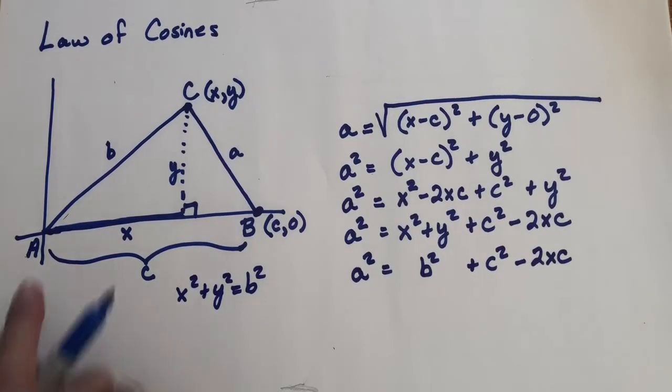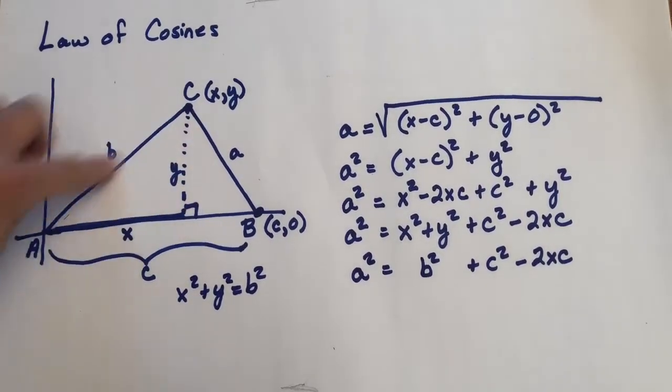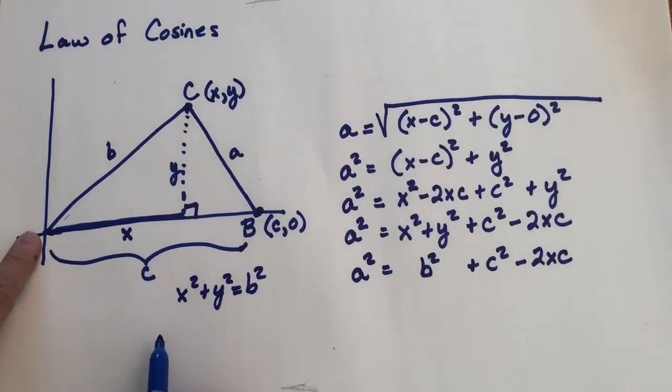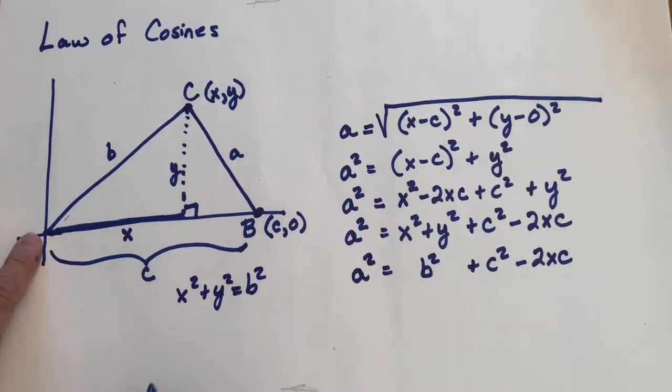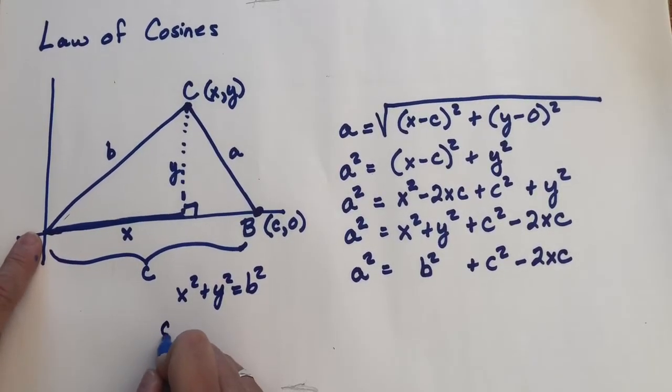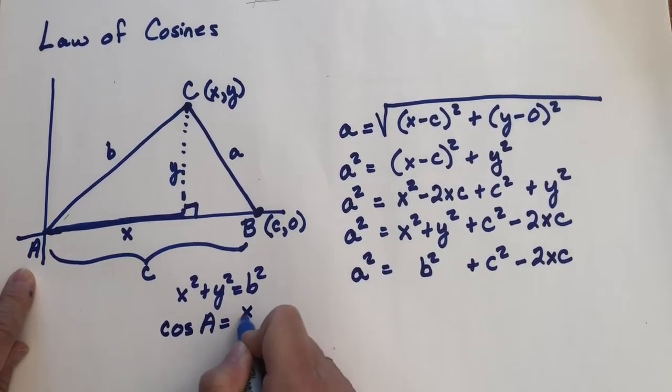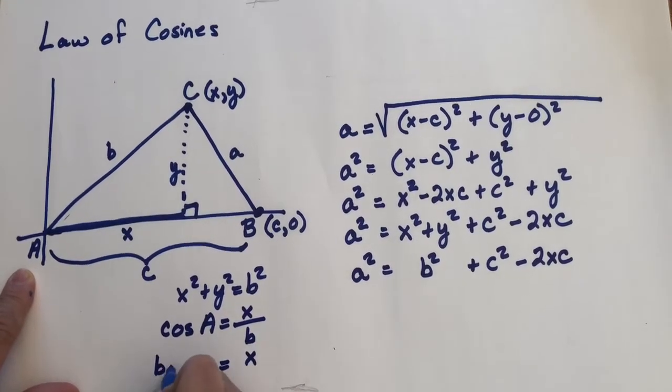Now we still have an X here in our formula, and I want to take care of that next. Let's look at this triangle here. Within this triangle on the left, we know that there's a relationship between this angle, the adjacent side, and the hypotenuse. And we know it's this: that the cosine of A would equal X over B, or X equals B cosine A.